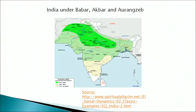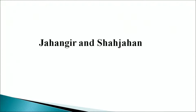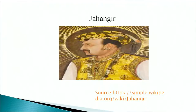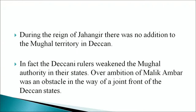Now let us move to Jahangir and Shah Jahan's rule in India. Jahangir decided to follow Akbar's expansionist policy in the Deccan but could achieve little success due to certain problems. He could not devote much attention at the crucial phase due to Khurram's revolt. The Mughal nobles were involved in intricacies and conflicts over the Deccan. The picture shows Jahangir. During his reign there was no addition to the Mughal territory in the Deccan. The Deccan rulers weakened the Mughal authority in their states, and the over-ambition of Malik Ambar was an obstacle to any joint front of the Deccan states.